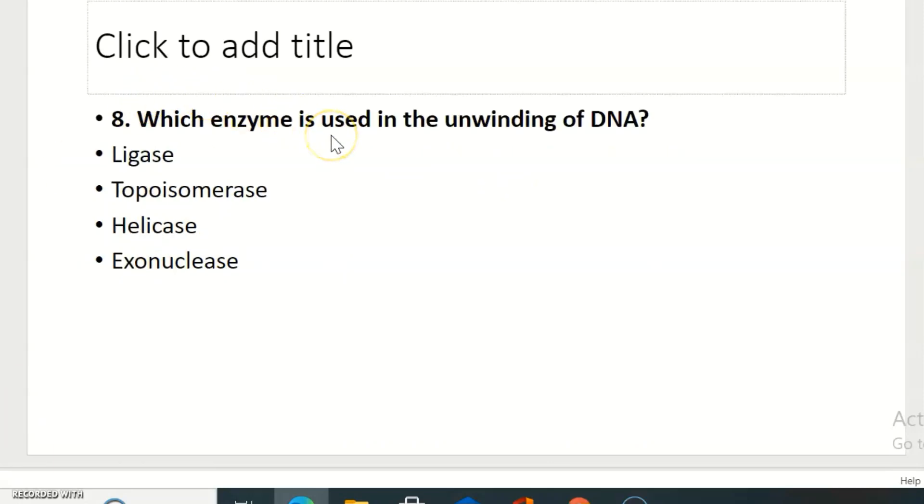Which enzyme is used in the unwinding of DNA? Ligase, topoisomerase, helicase, exonuclease. The right answer is helicase. Helicase is used in the unwinding of DNA.